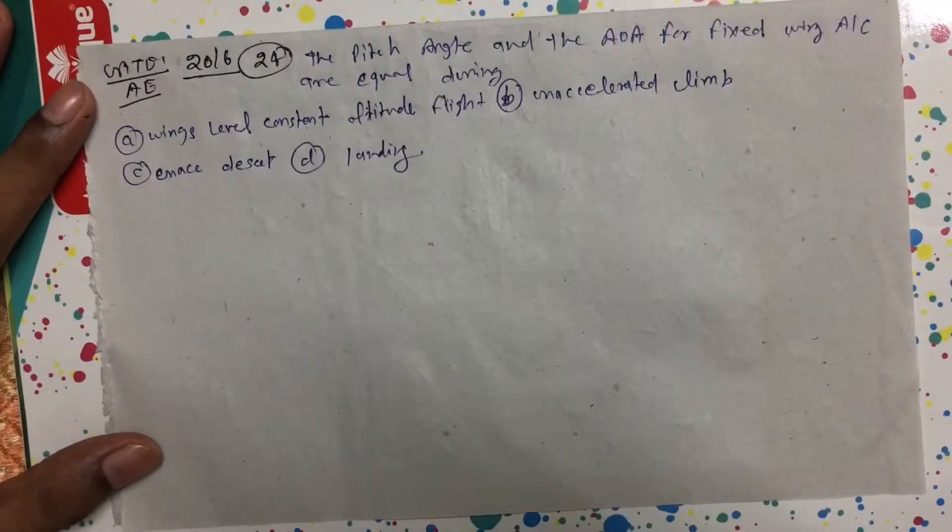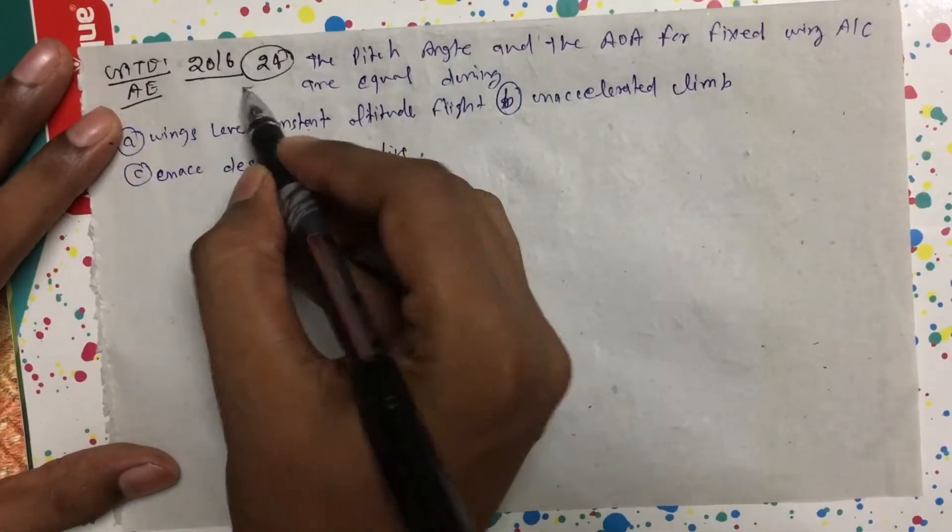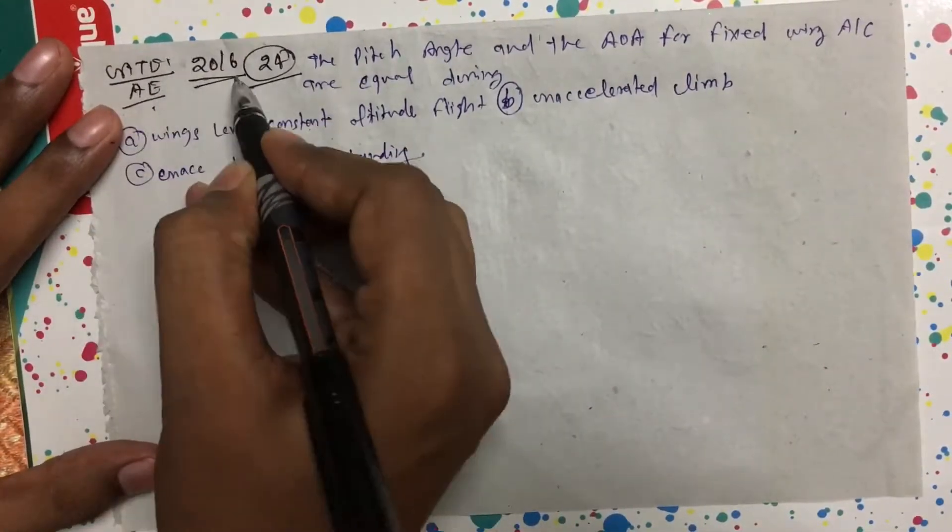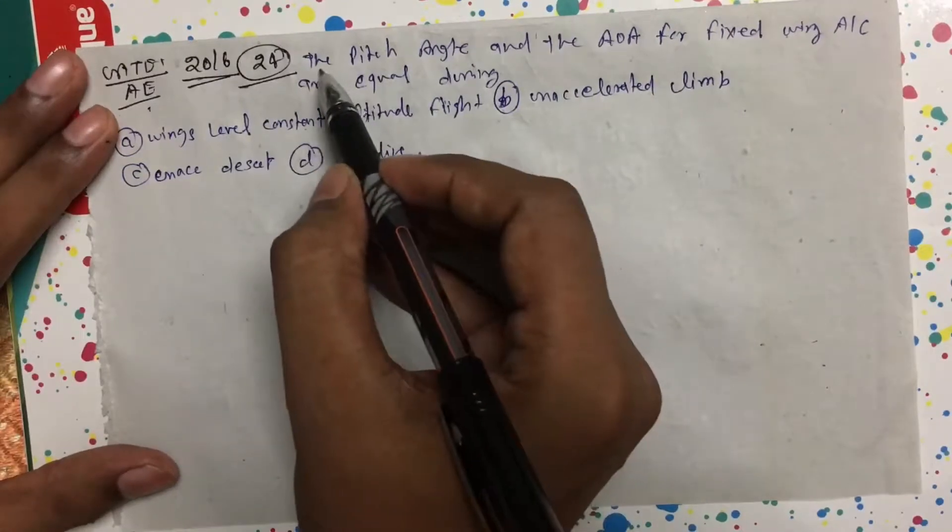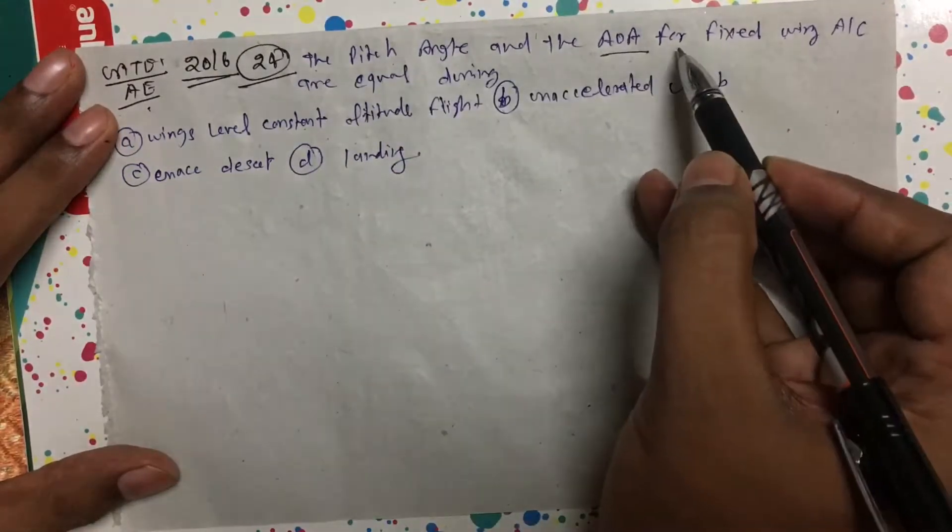Hi, welcome to the Concept Library. Please watch the complete video. In this question, this is again a very beautiful question. Question number 24, Gate Aerospace 2016. The question asks: the pitch angle and the angle of attack for fixed wing aircraft are equal during...